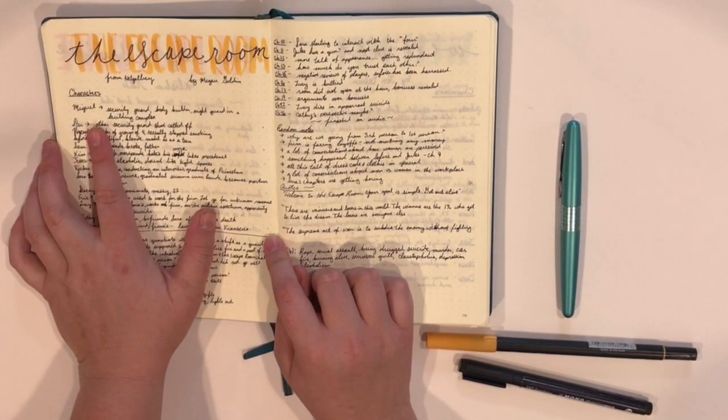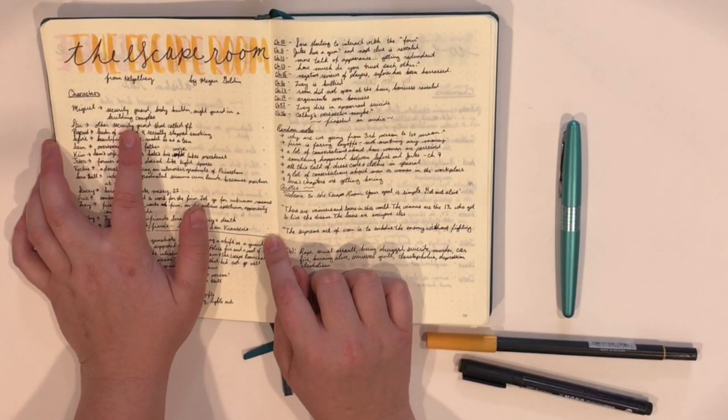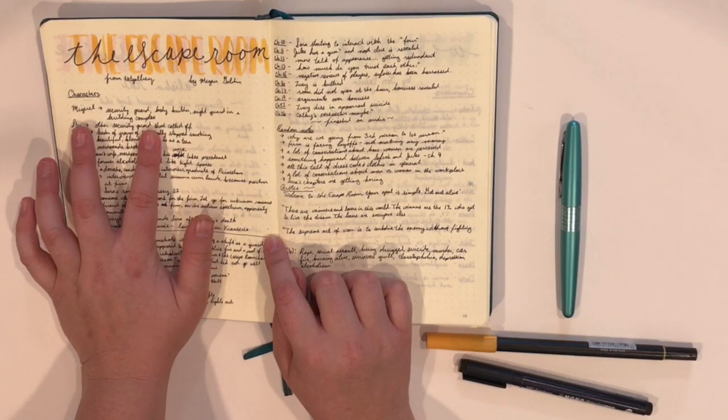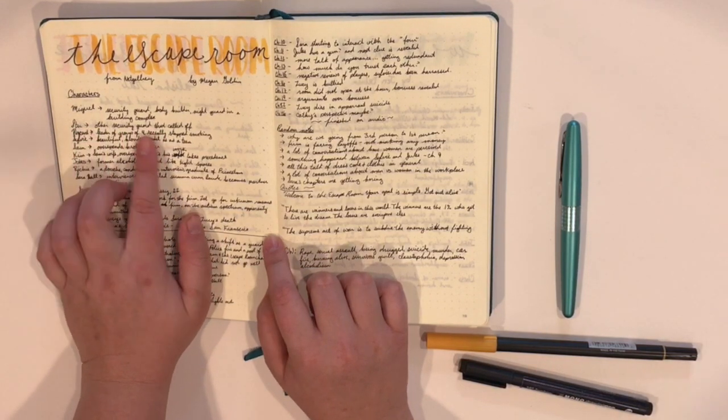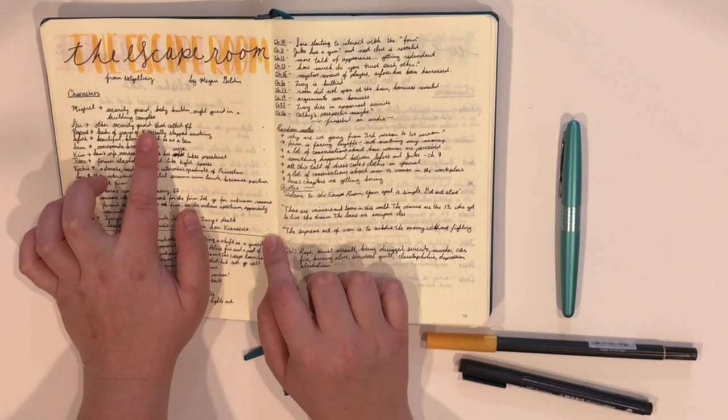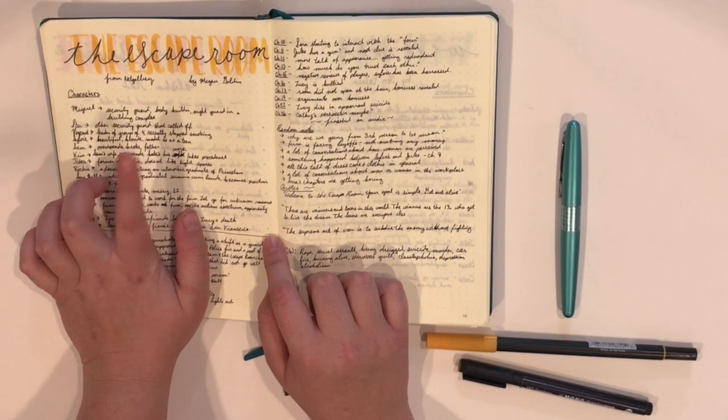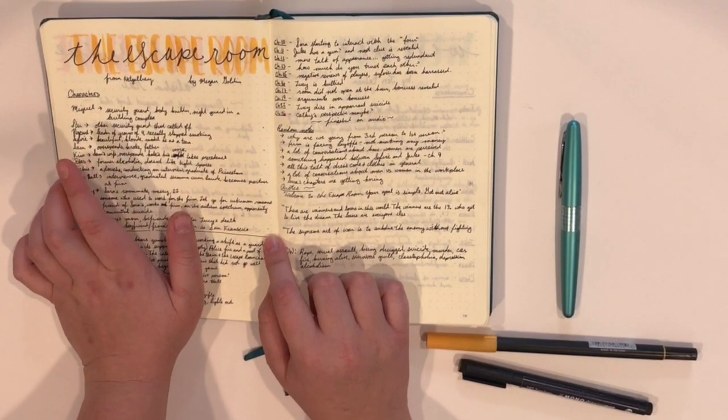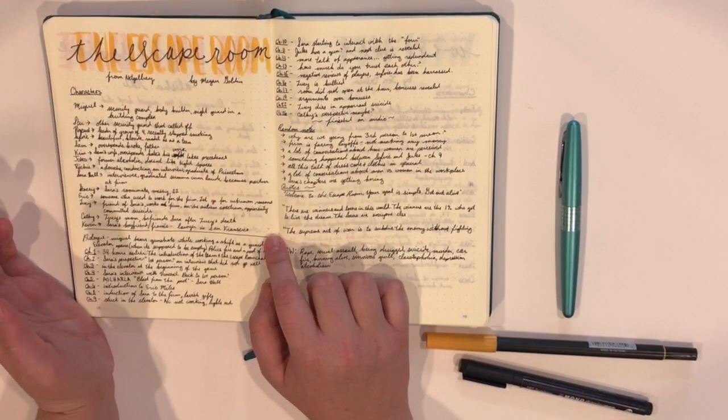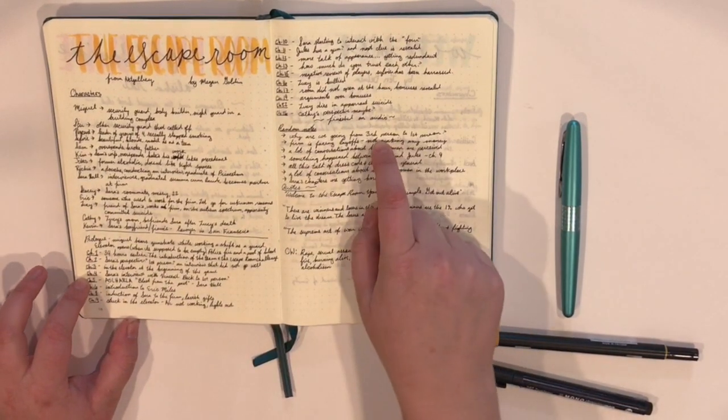So, I have a section of characters, and I literally will write down every single character. Like, this guy right here, Miguel, is a security guard. And then I'll just write down any type of description that they have about him. He's a night guard in a building complex. He literally does not make an appearance after that one scene, but I didn't know that when I first started. So, I wrote him down.